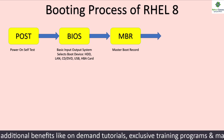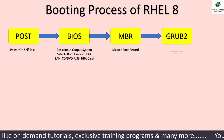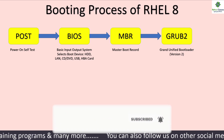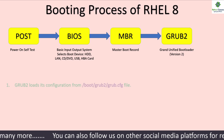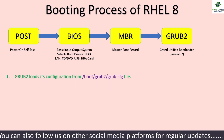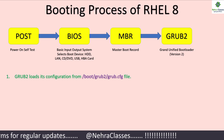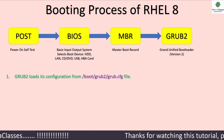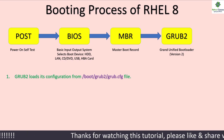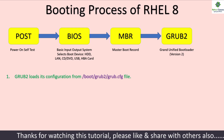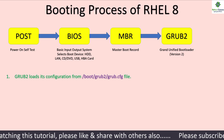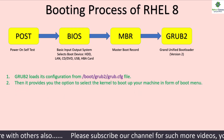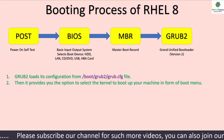MBR then points to Grub2, which is the Grand Unified Bootloader version 2. It loads the kernel into memory or RAM. It provides us the grub menu where we can select the desired kernel to boot up our machine, or it will automatically boot from the default kernel if it does not receive input from the user within a period of time, generally 5 seconds. Grub2 loads its configuration from /boot/grub2/grub.cfg, which provides the grub menu to select the kernel.